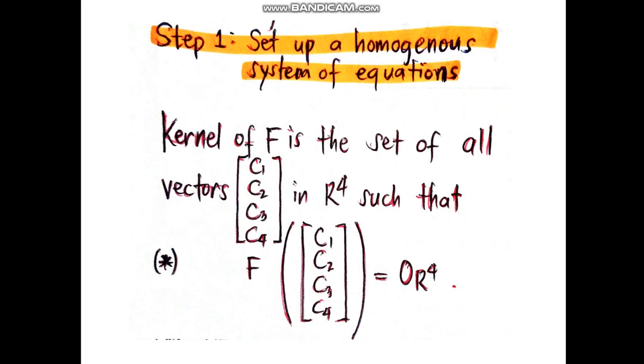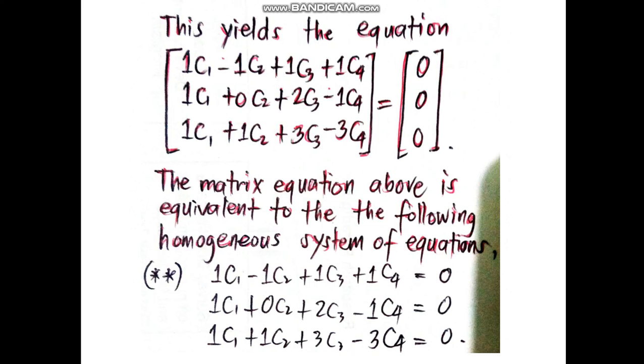The first step is to set up a homogeneous system of equations. The kernel of F is the set of all vectors c1, c2, c3, c4 in R to the fourth such that F of the vector c1, c2, c3, c4 equals 0 in R to the fourth.